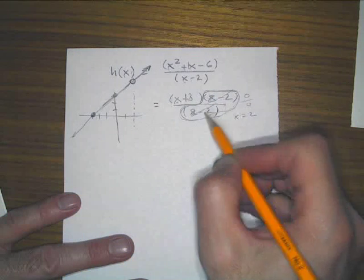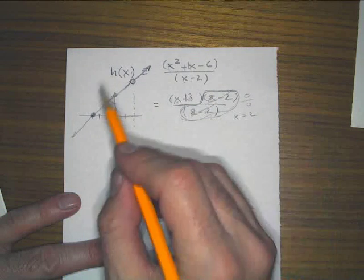If you see matching zeros top and bottom, you get a hole.